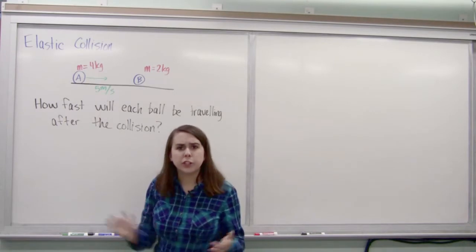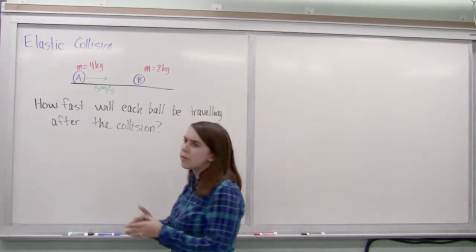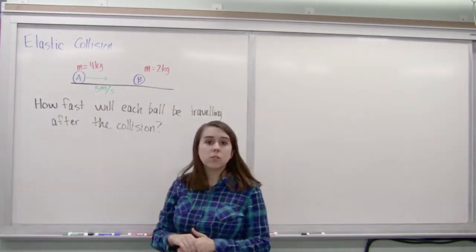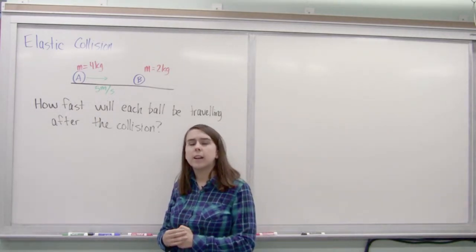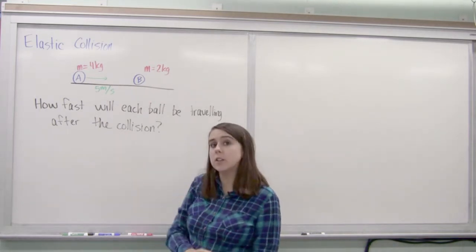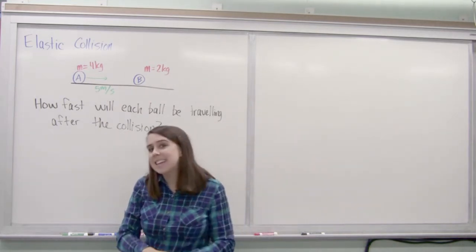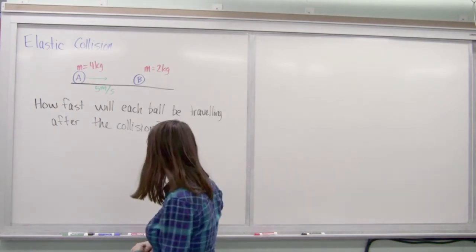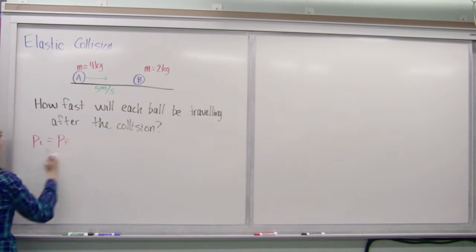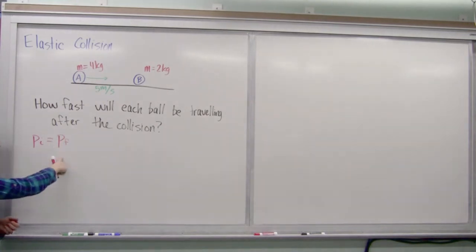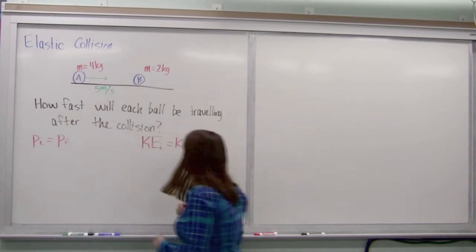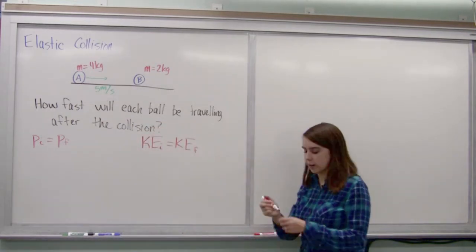We don't have to deal with friction or gravity or anything like that because they're just moving in a straight line and they're going to hit each other. So let's start by recognizing that momentum has to be conserved in this interaction. Since it's an elastic collision, momentum and kinetic energy are both going to be conserved. I can write out initial momentum is equal to final momentum, and initial kinetic energy is equal to final kinetic energy.